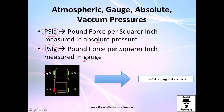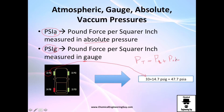For example, if the gauge reads 33 PSI, that is the gauge pressure of the tire. To get the total absolute pressure, you add the atmospheric pressure — about 14.7 psi — giving you 47.7 psia. That 'A' notation tells you it is absolute pressure: the total force per unit area acting on the material.